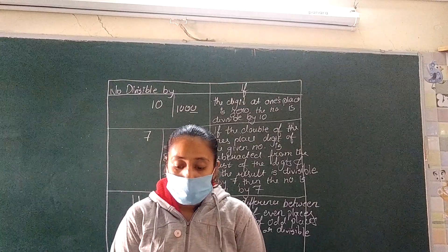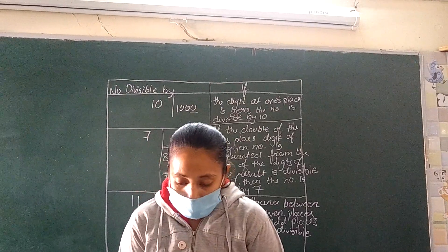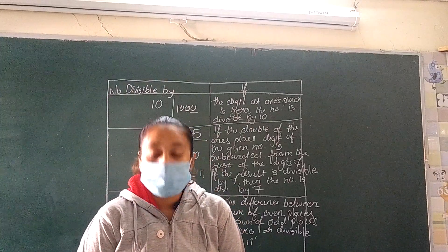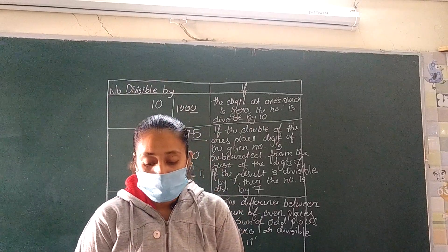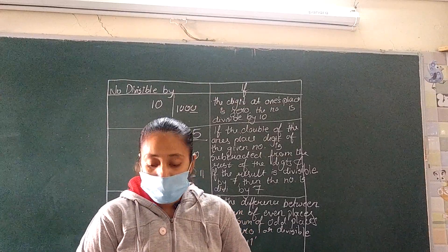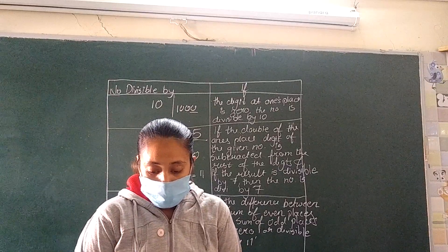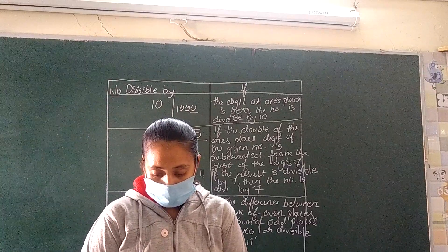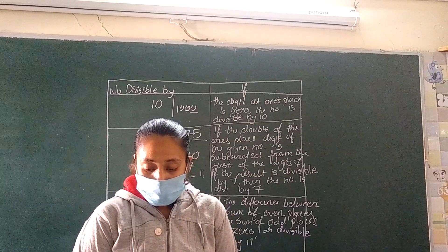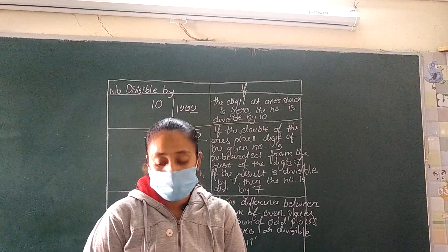Here there is one more example: 1903. The digits at odd places are 9 and 3; the digits at even places are 1 and 0. The sum of odd places is 12, and the sum of even places is 1. So 12 minus 1 is 11, which is divisible by 11, so 1903 is divisible by 11.